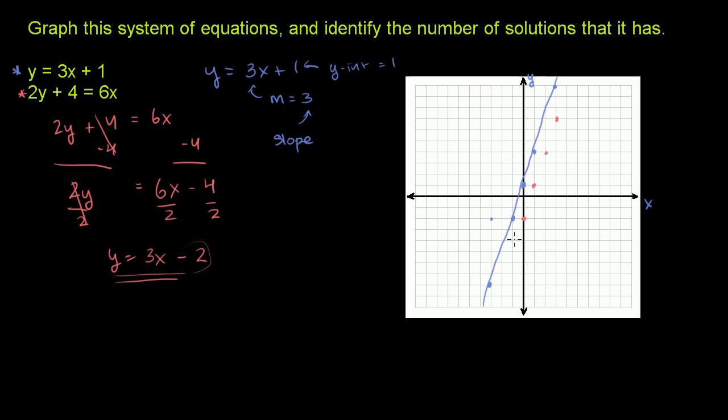Just like that. So if we connect the dots here, it'll look something like this. Do my best to draw a straight line. So the second graph, 2y plus 4 equal to 6x, we put it into slope-intercept form, and we graphed it.